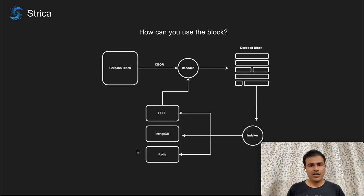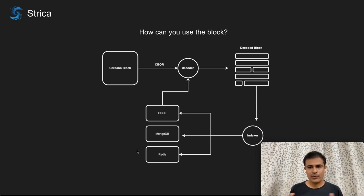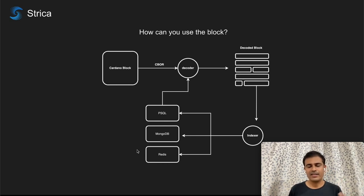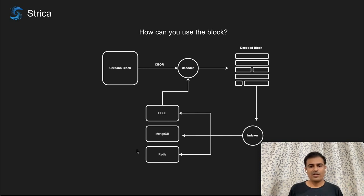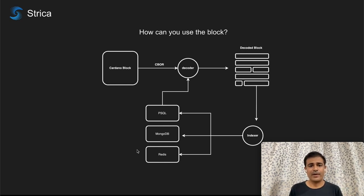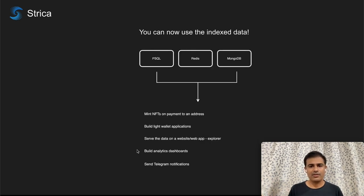Once you receive a block, you decode it — converting the CBOR block representation to a JSON representation. You now have full control over how to utilize this decoded block. You create what we call an indexer: once the indexer receives the JSON, you can write all sorts of business logic — tracking balances for a certain address, tracking delegations to a certain pool. You can write this data to a Postgres database, MongoDB, Redis, or bring your own database. The indexer is your choice of language and application. Once the database is ready, you just build tools around it to utilize the data.